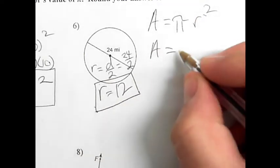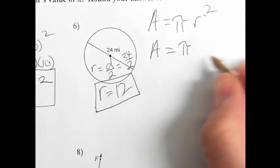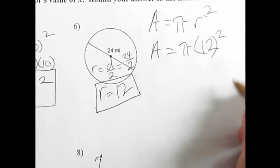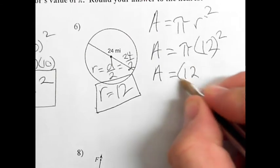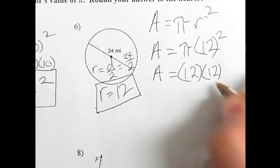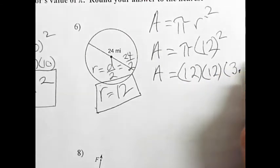So that would be the area is equal to pi times 12 squared. Now that's the same as 12 times 12 times 3.14.